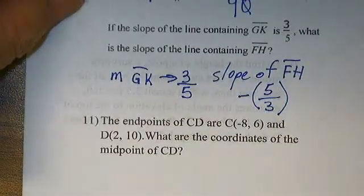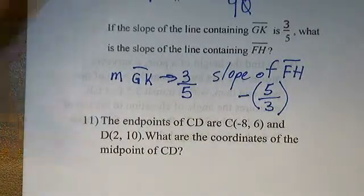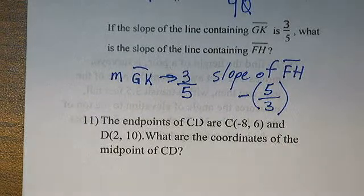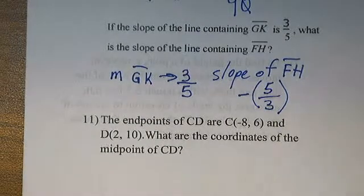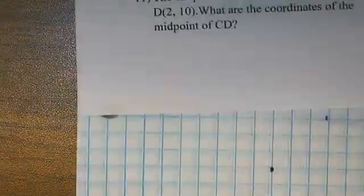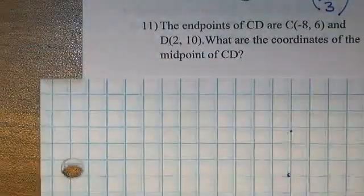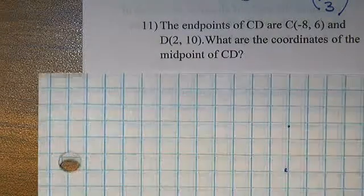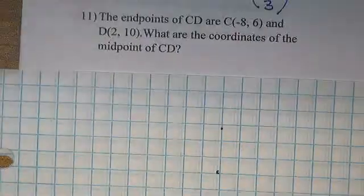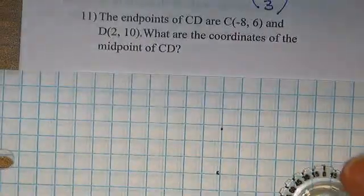Problem 11. Another problem that is absolutely ideal for graph paper. That is the first hint, all day, all day, every day. The endpoints of CD are negative 8, 6 and 2, 10.